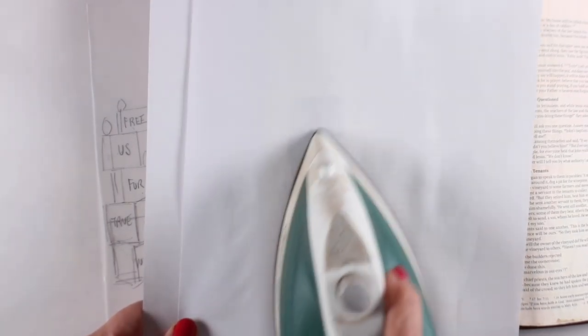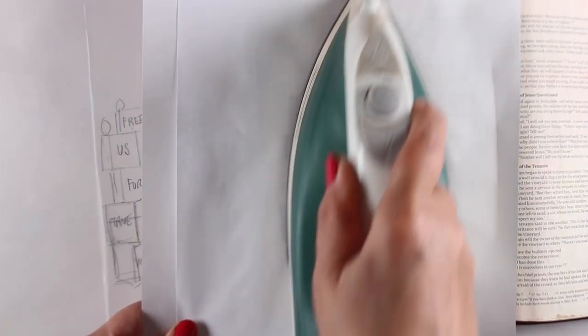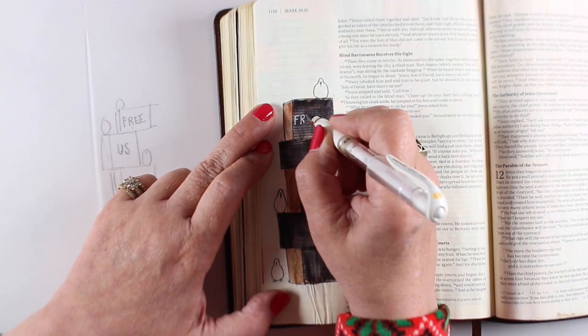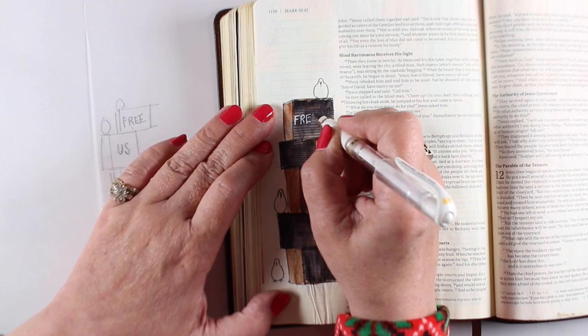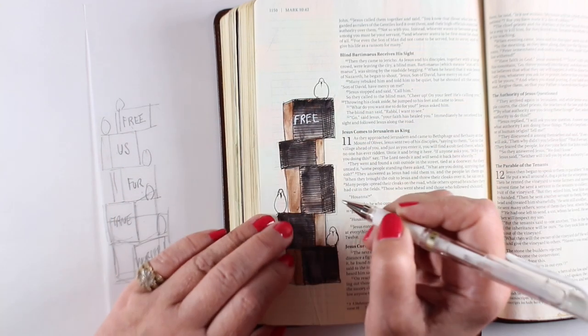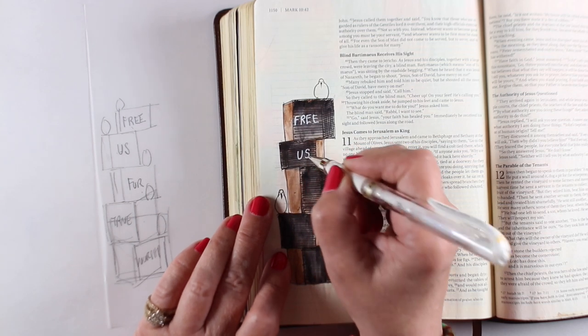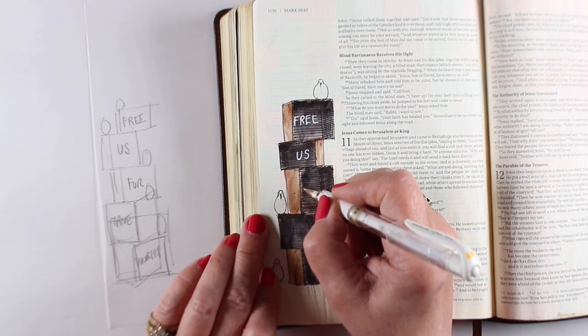Once it was dry, I ironed it to flatten it out a bit, just a couple seconds with a hot iron is plenty. And then wrote my words in it. And the words I ended up trying to write on that back panel so that it looked like you couldn't see them until the birds were freed, the lids were off the boxes. And I wrote, free us for true worship.